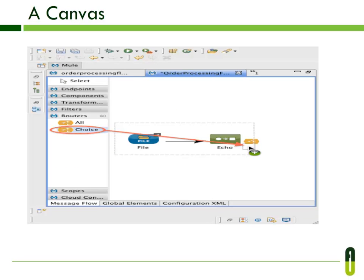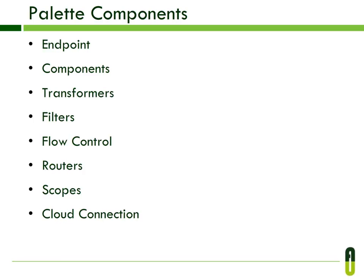The last component is the canvas. The canvas is the graphical editor where you drop elements from the palette to build your flow. You can see how to drag elements from the palette and drop them into the canvas. Inside the editor you can create one or more flows, and using the global elements pane, you can configure global Mule elements.